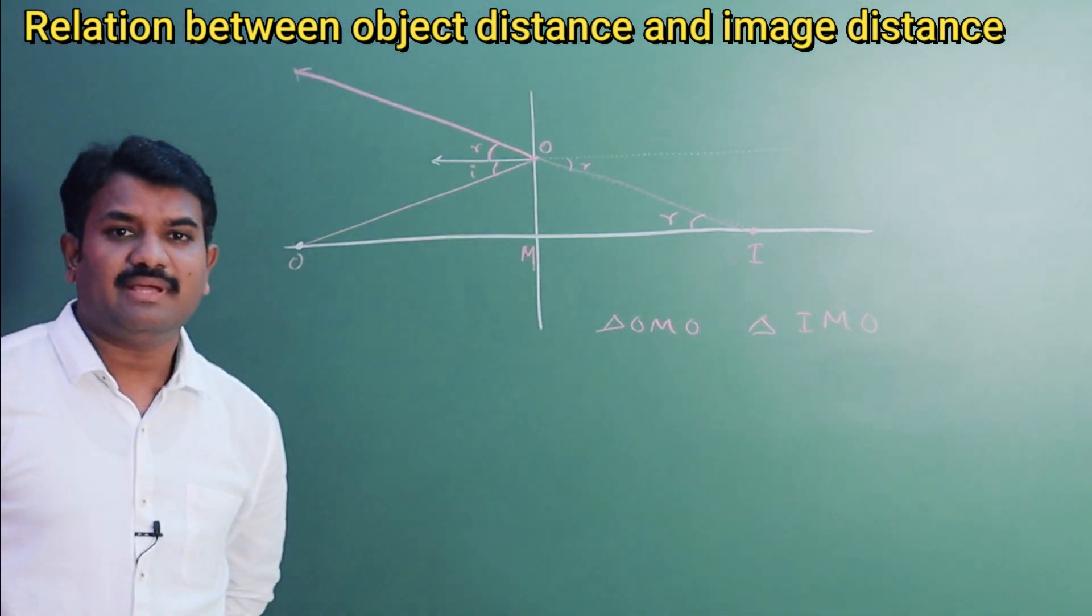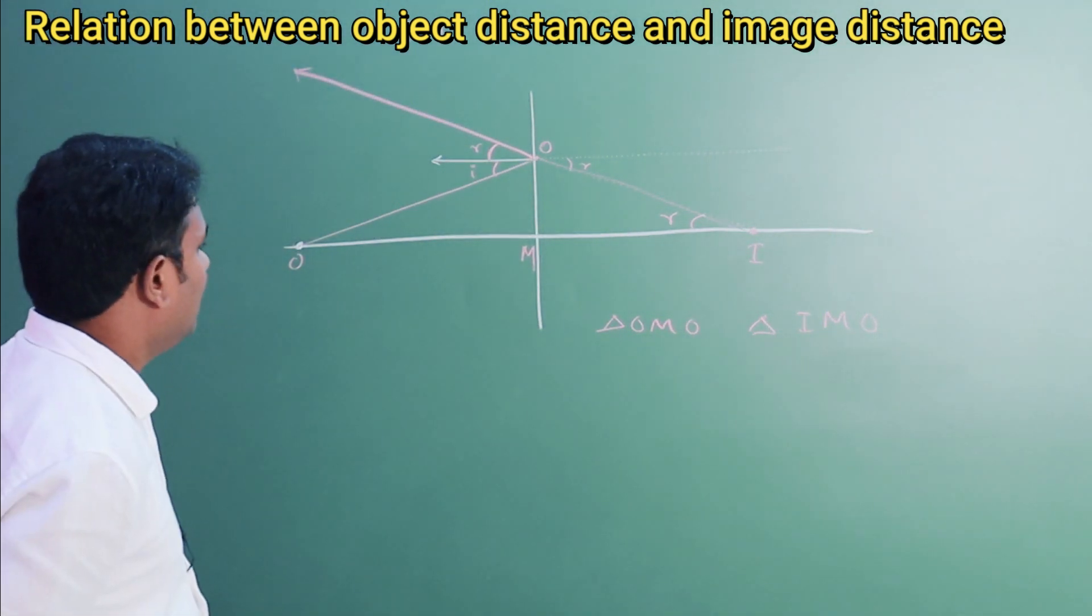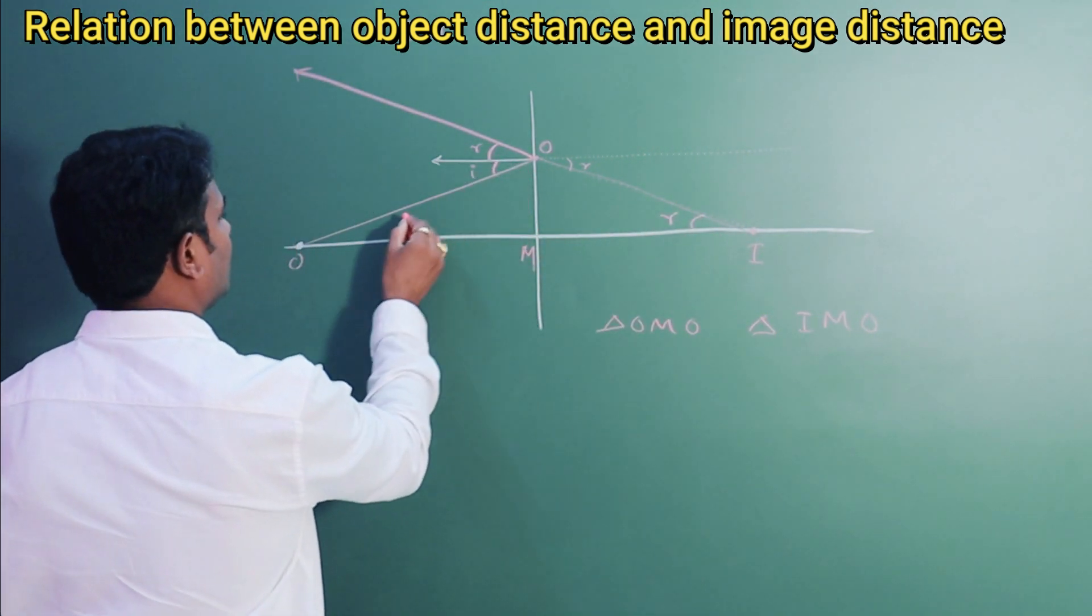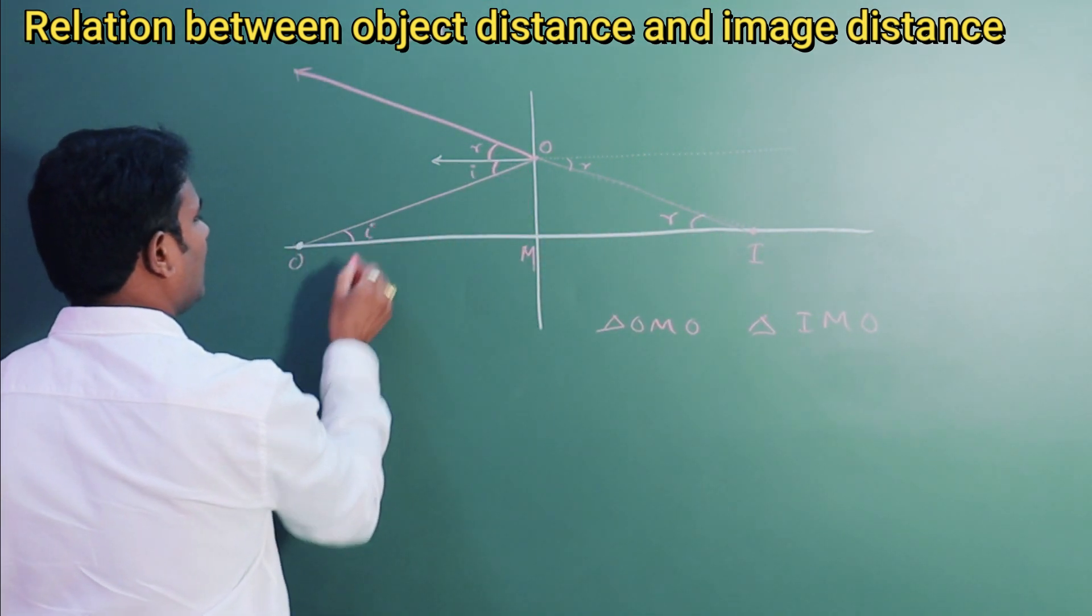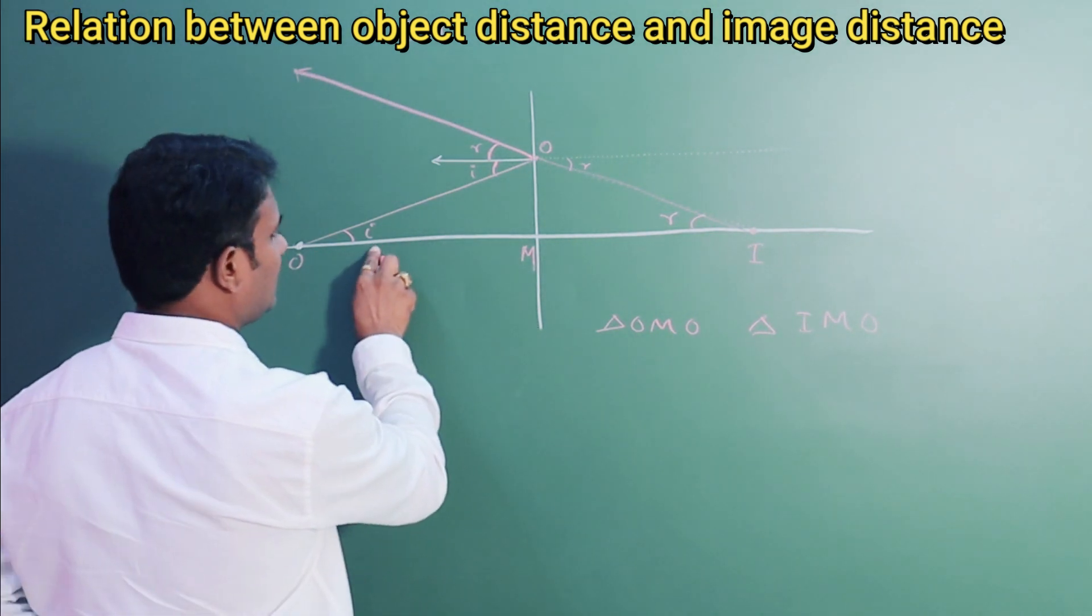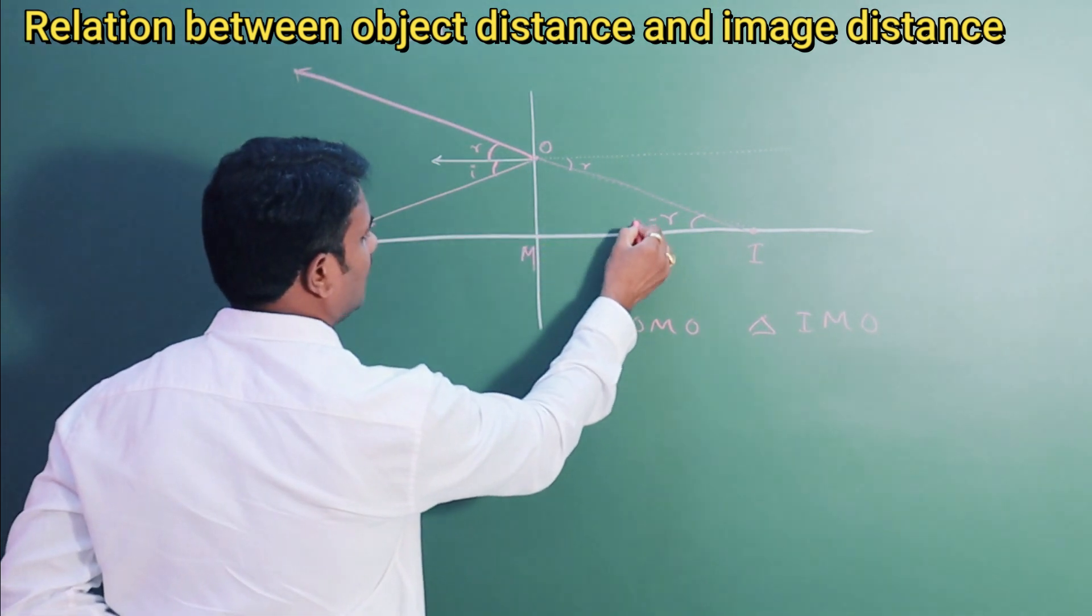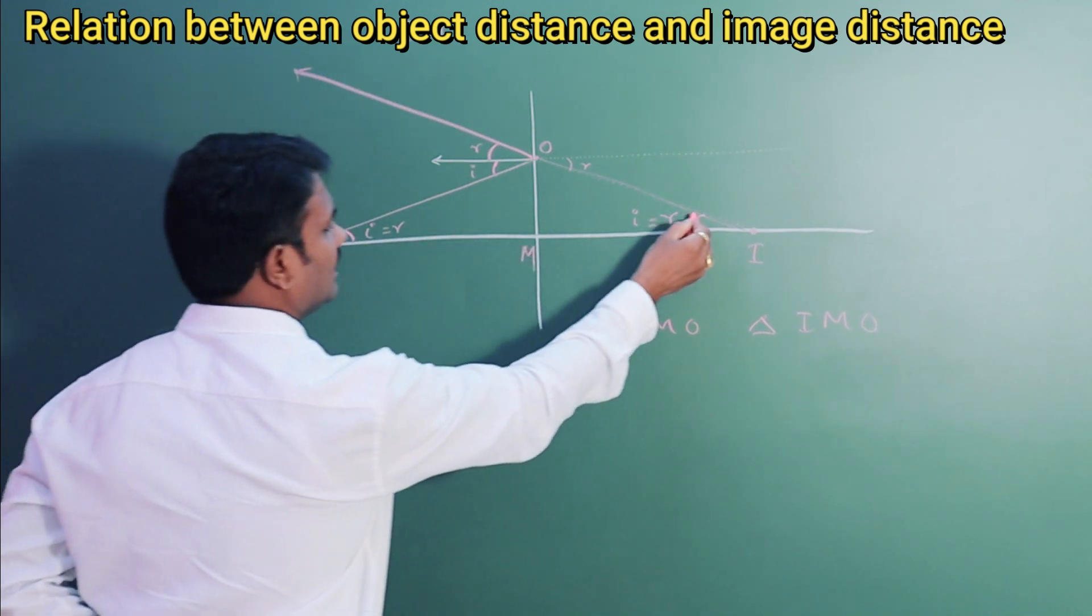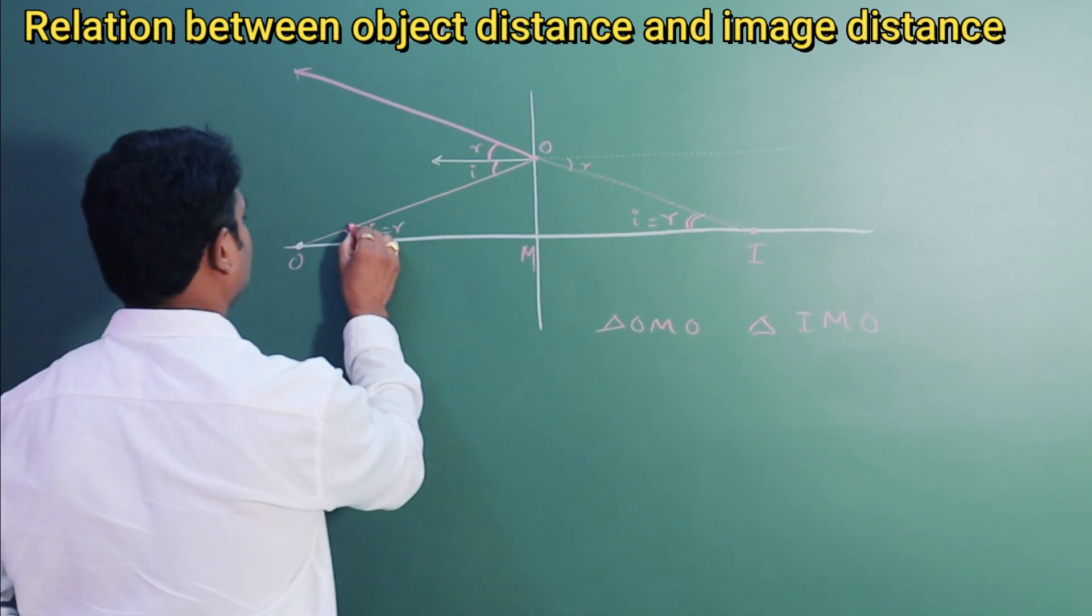So let us compare these two triangles. If I compare these two triangles, if this is I, here this is alternate angle, this is also I. As you know that I equal to R, this is equal to I, this is equal to R, means this angle and this angle are equal.